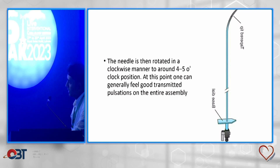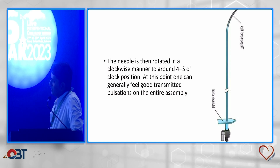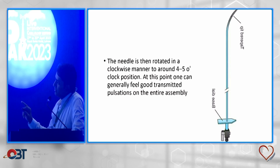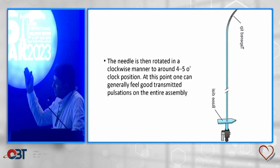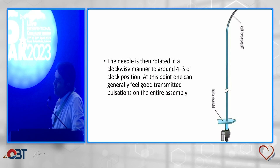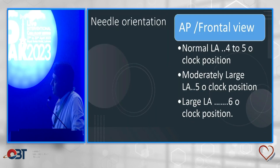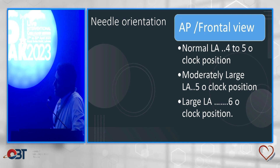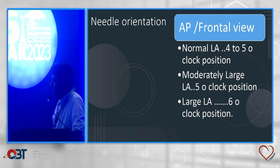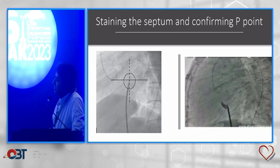A brief description of the puncture needle: the needle hub — we rotate the needle from 3 to 4 o'clock while moving down to identify the puncture P point. For needle orientation: in a normal size or slightly dilated LA, 4 to 5 o'clock position is good; for moderately large LA, 5 o'clock position; and for an extremely large LA, 6 o'clock position will be good for the puncture.